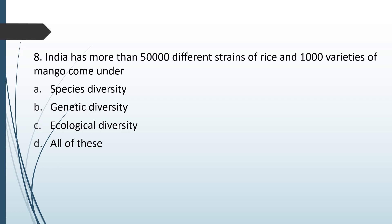India has more than 50,000 different strains of rice and 1,000 varieties of mangoes. Does this come under species diversity, genetic diversity, ecological diversity, or all of these? The correct answer is option B — all this comes under genetic diversity.